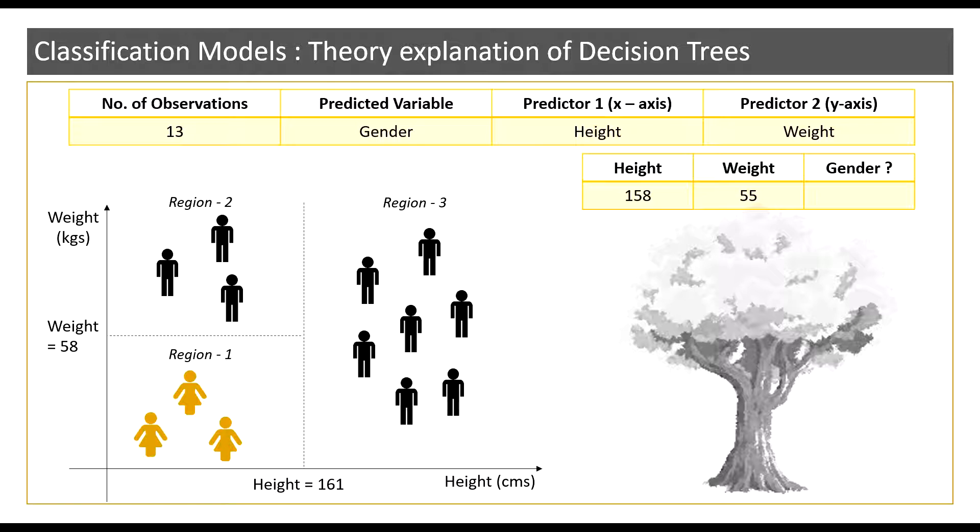I now call upon the first threshold value that is height. I asked the question: is the height of this observation less than 161 centimeters which is my threshold value? The answer is going to be either a yes or a no. Since this observation has a height of 158 centimeters and 158 centimeters is obviously less than the threshold value 161 centimeters, the answer in this case is yes.